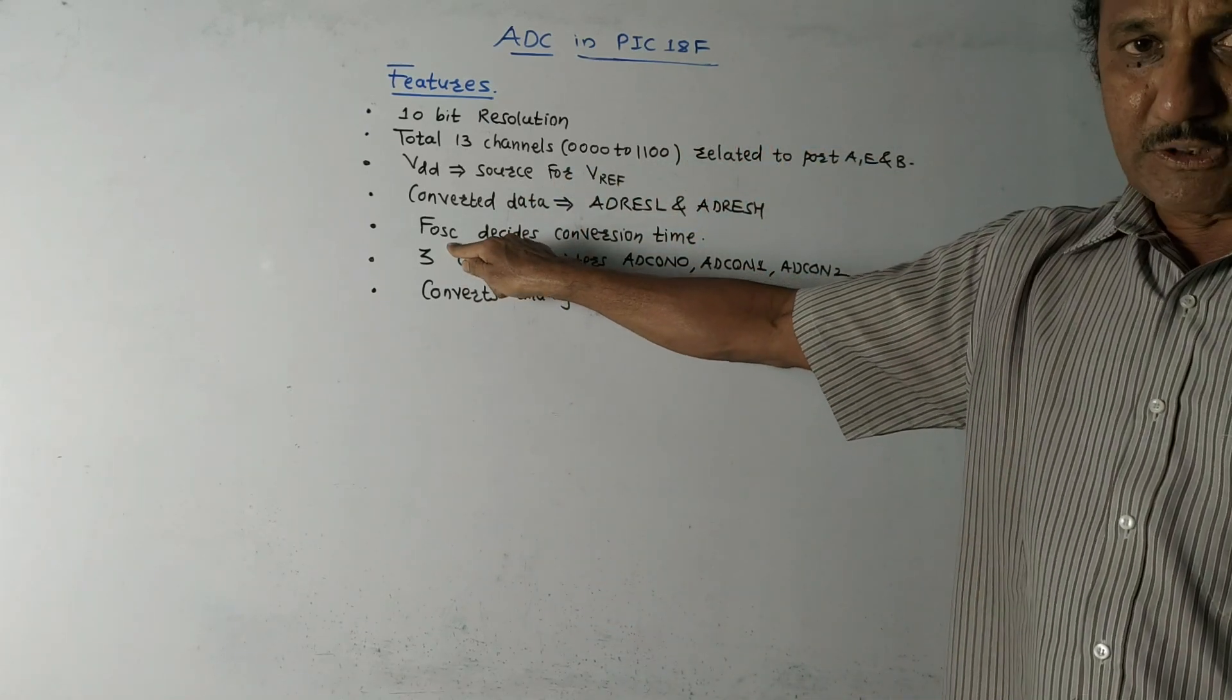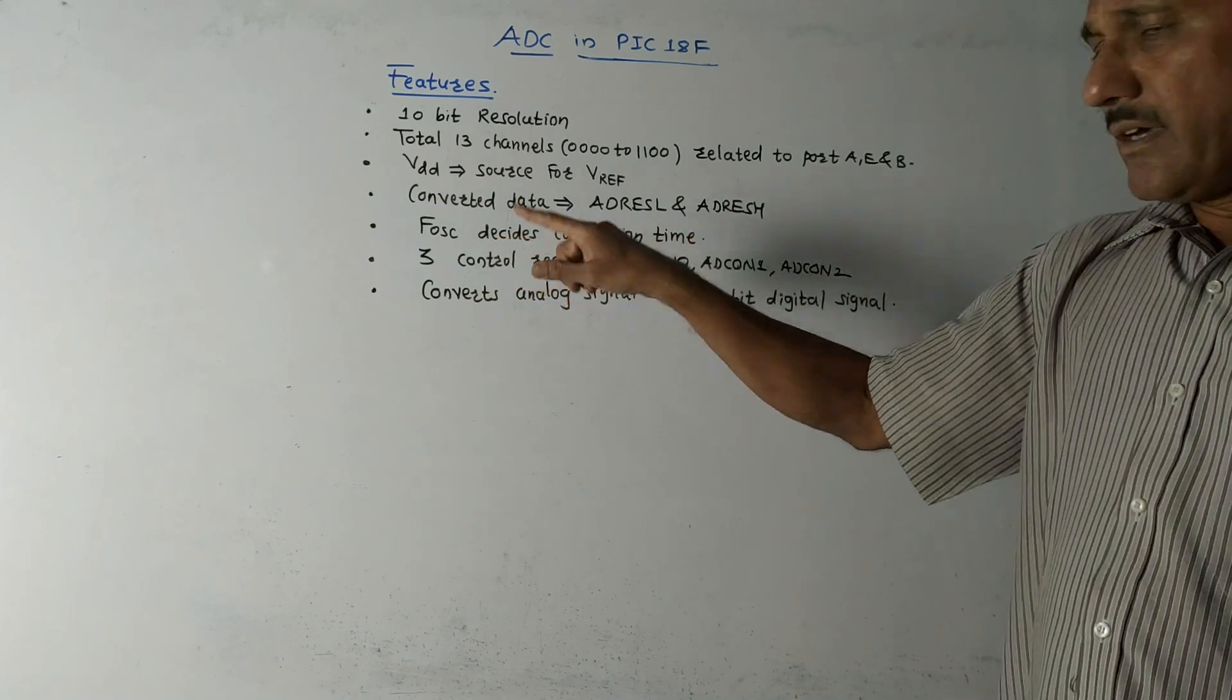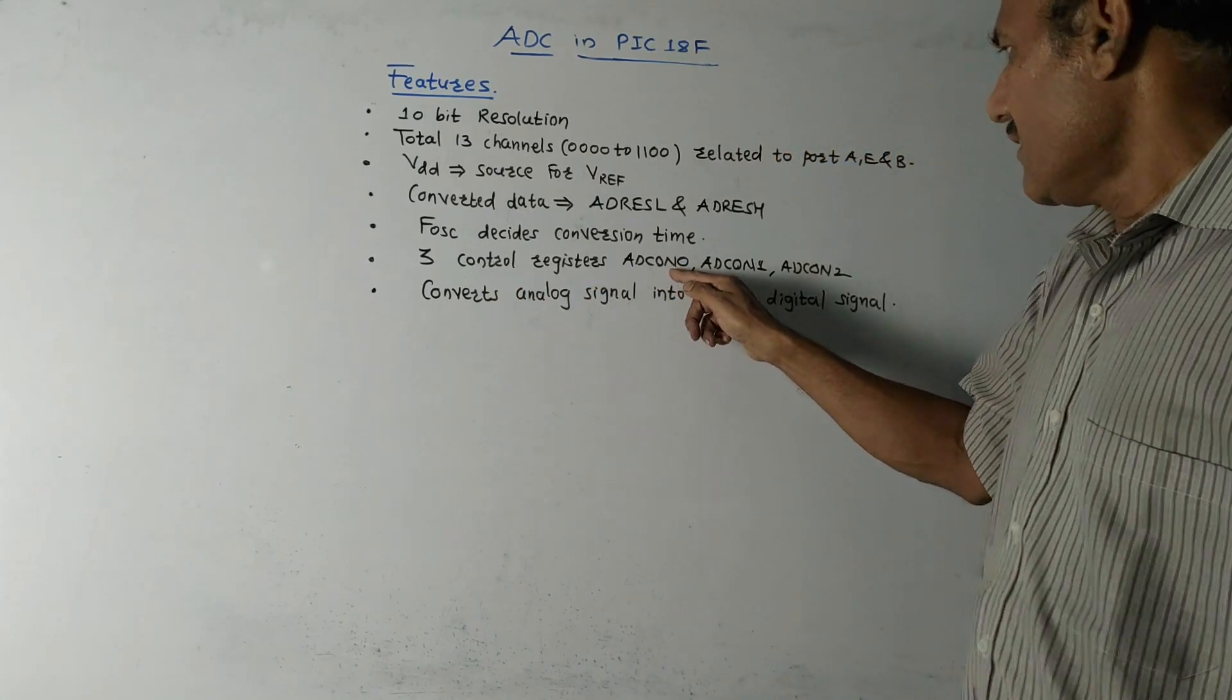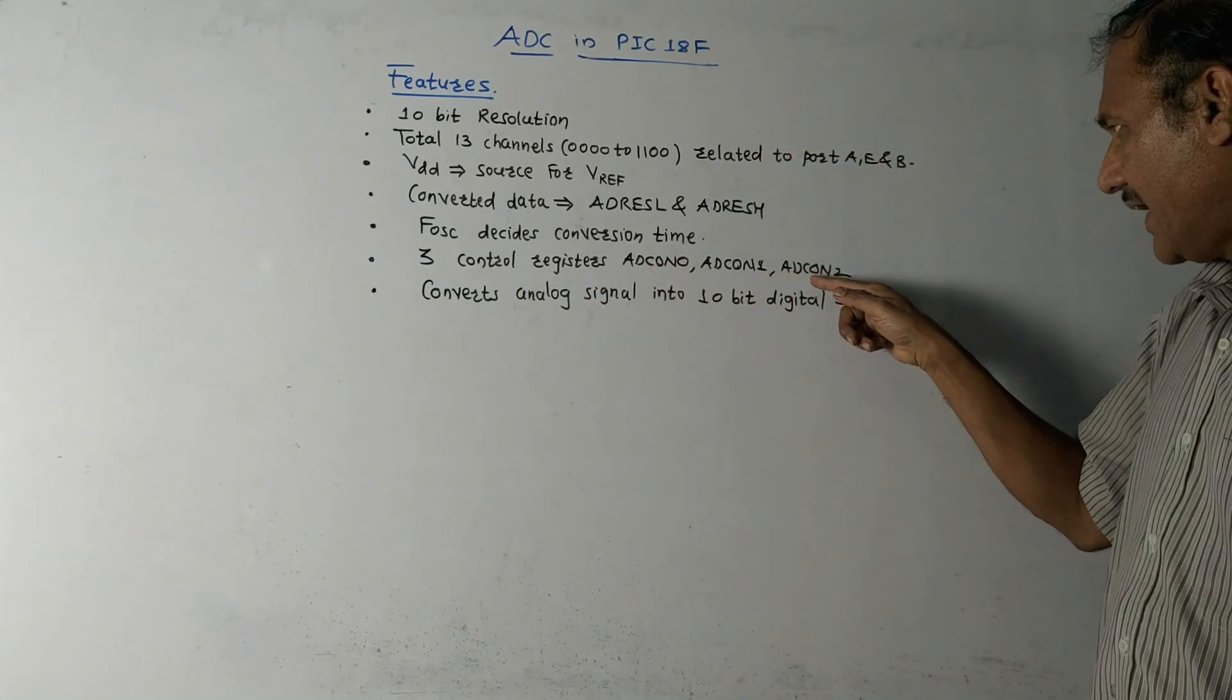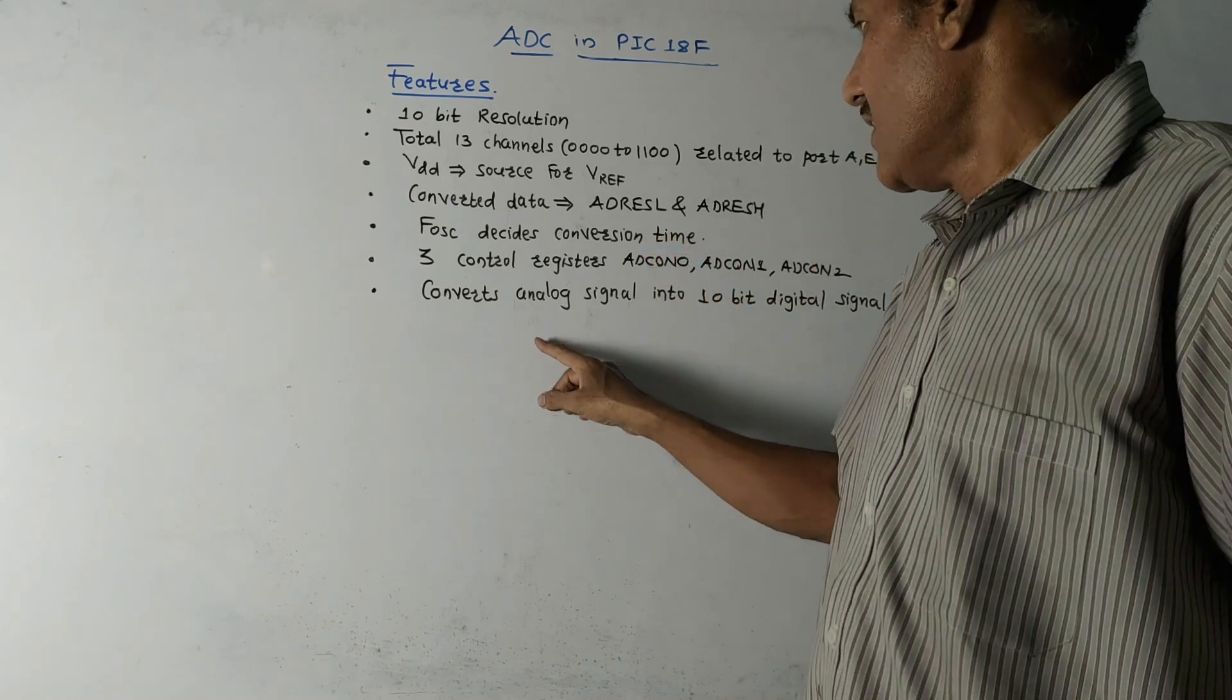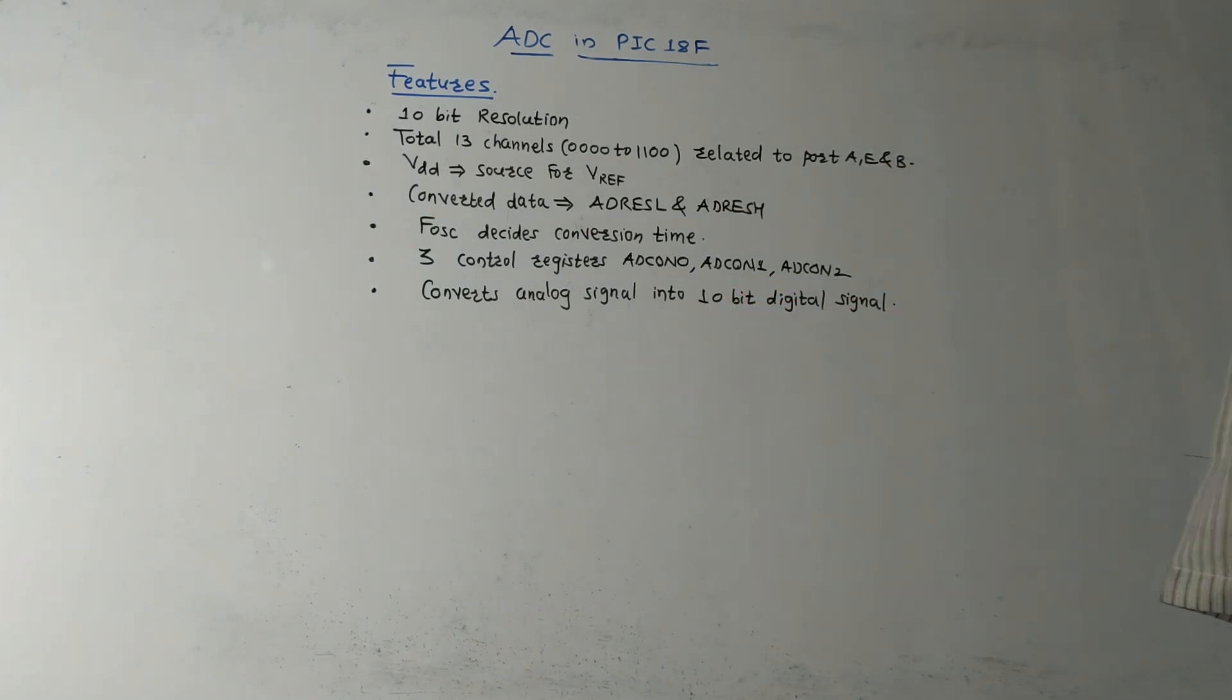Then Fosc oscillator, that is frequency of oscillator, decides the conversion time. Three control registers are used that we already discussed: ADCON0, then ADCON1, and ADCON2. These are the ADC control registers. It converts analog signals into 10 digital signals. That's why the resolution is 10 bit.